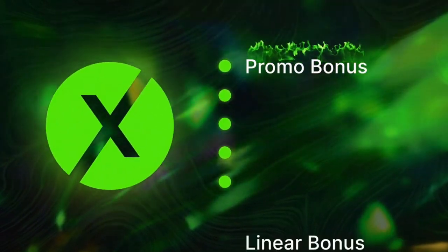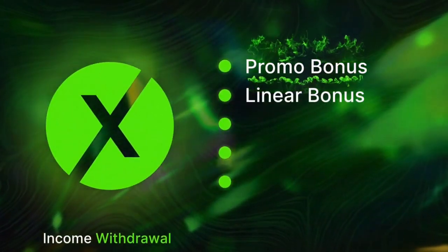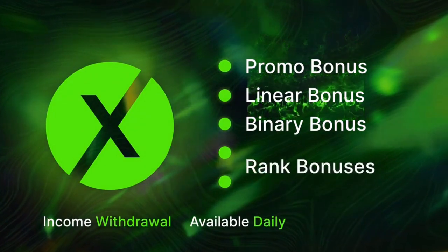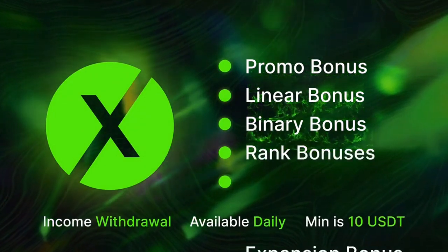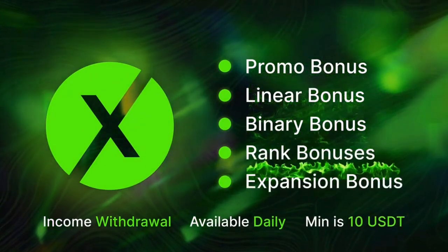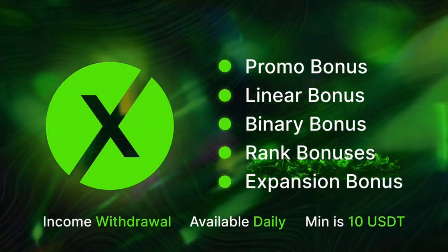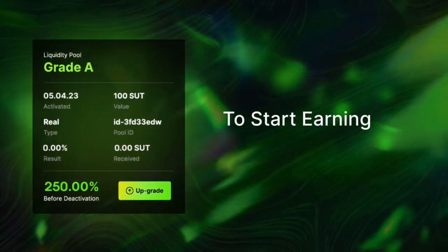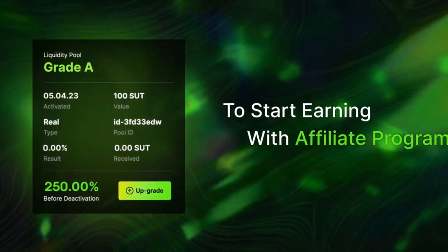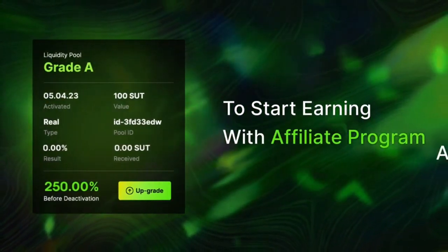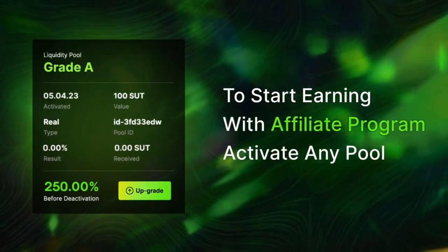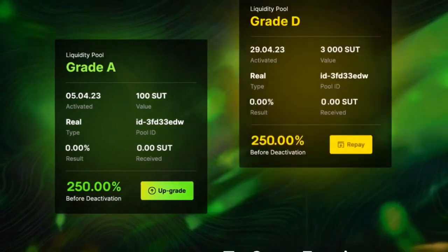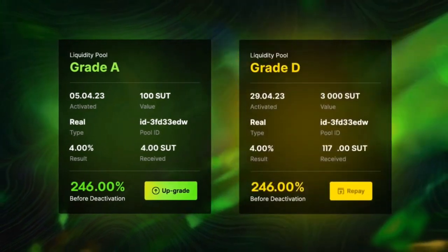The five bonus types are: Promo Bonus, Linear Bonus, Binary Bonus, Rank Bonuses, and Expansion Bonus. To start earning with the affiliate program, you must activate at least one real-type or credit-type liquidity pool.